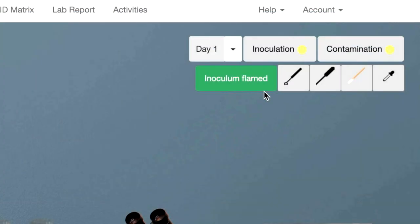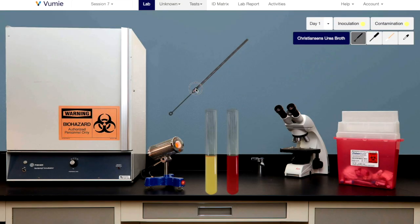Select the transfer tool. If it's a loop or a wire, flame it. Then move the tip of the transfer tool down into the inoculum broth. A message will appear indicating success.